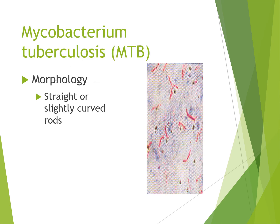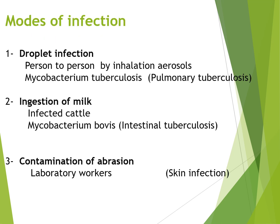There is a diagram on the right-hand side showing the morphology — you can see the straight or slightly curved rods. The modes of infection are droplet infection, ingestion of milk, and contamination or abrasion. Droplet infection and inhalation of aerosols results in pulmonary tuberculosis caused by Mycobacterium tuberculosis. Ingestion of milk results via infected cattle and is caused by Mycobacterium bovis, resulting in intestinal tuberculosis. Contamination or abrasion in laboratory work causes skin infection.